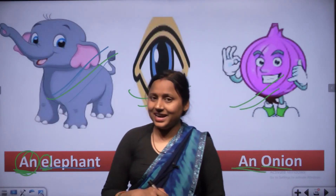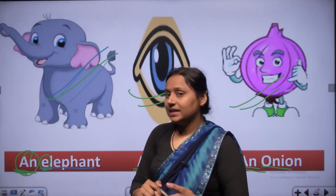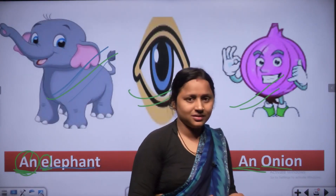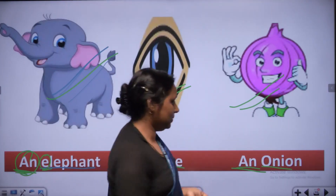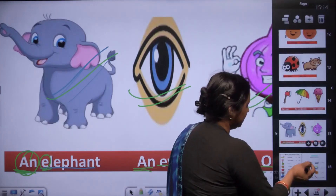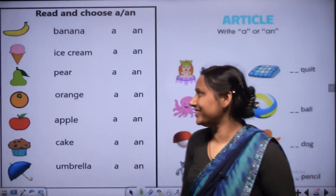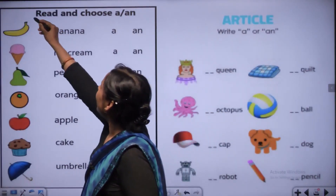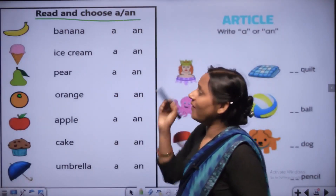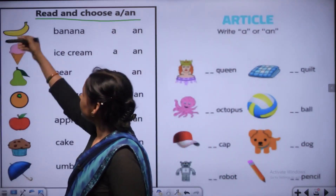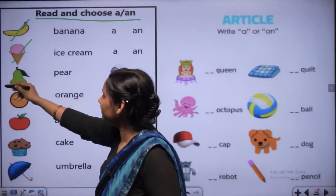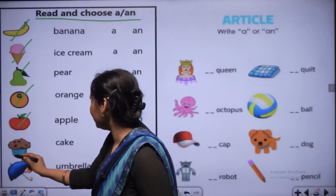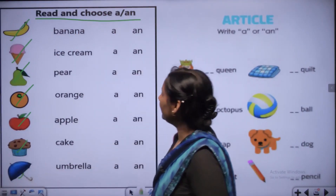Here we learned where to use A and AN in English. Today we learned where to use A and AN - A is used before consonant words, AN is used before vowel words. Now let's do the worksheet - read and choose A or AN.